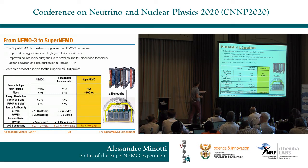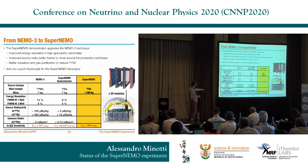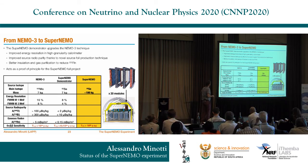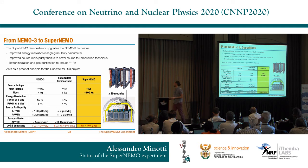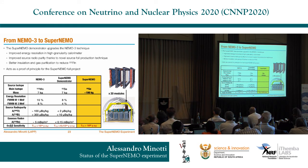Thanks to all these improvements, we can improve the sensitivity from NEMO3 to SuperNEMO by a factor of six. The SuperNEMO demonstrator acts as a proof of principle for the full detector, which would consist of 20 modules and will start to scratch the inverted mass hierarchy region, reaching sensitivity of the order of 10²⁶ years.